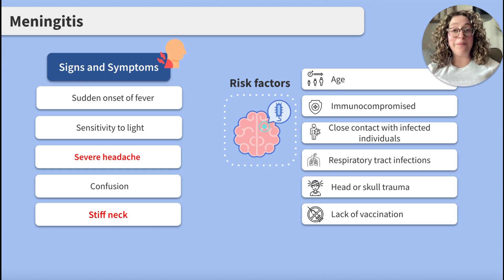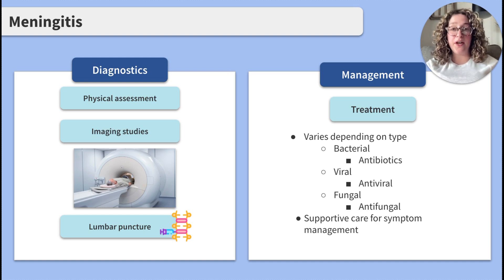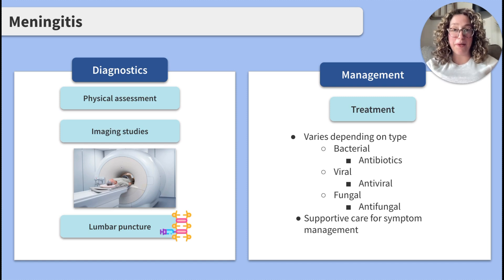Let's review how meningitis is diagnosed and treated. Meningitis is typically diagnosed with a combination of a physical assessment, imaging studies such as a CT or MRI, and a lumbar puncture to analyze cerebrospinal fluid. Treatment varies depending on the underlying cause and can include antibiotics for bacterial meningitis, antivirals for viral meningitis, or antifungals for fungal meningitis. The client is also provided supportive care such as IV fluids or pain medication for symptom management.